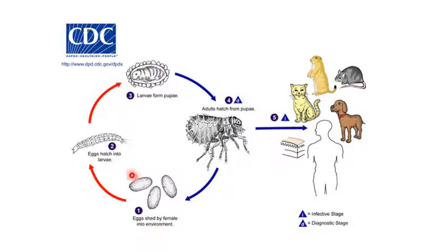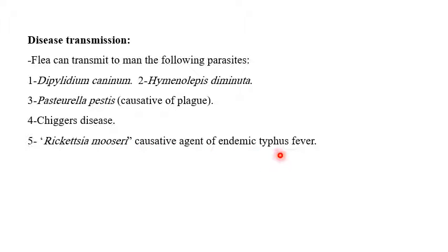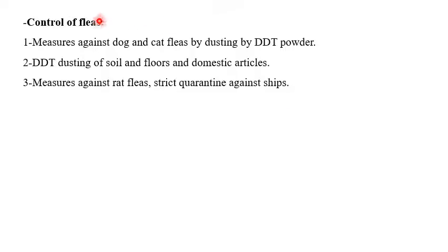The life cycle goes: eggs, then larvae, then larvae form pupae, then the adult. Disease transmission — the flea can transmit to man the following parasites: Dipylidium caninum, Hymenolepis diminuta, Yersinia pestis causing plague, and Rickettsia mooseri, the causative agent of endemic typhus fever.